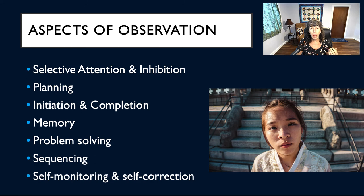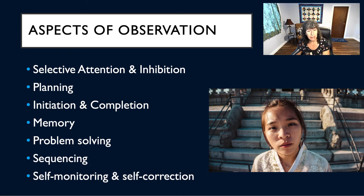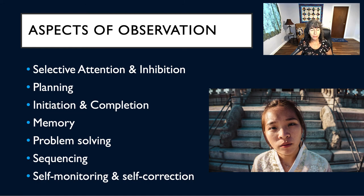We also want to look at how individuals plan — their initiation and completion of tasks. There can be difficulty with the planning of a task, the starting of a task, or the persistence and completion of a task. We want to see where the problem lies. Also memory, problem solving and sequencing, and the ability to self-monitor and self-correct. There are questions on the slide deck, and if you reference the presenter notes, you can see some of the questions we might ask to elicit information in these areas.